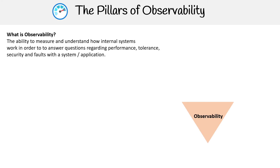So what is observability? That is the ability to measure and understand how internal systems work in order to answer questions regarding performance, tolerance, security, and faults within a system and application.